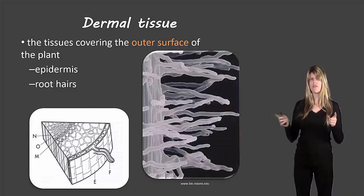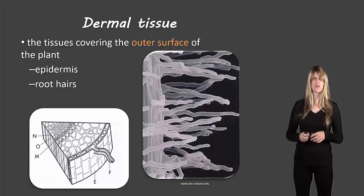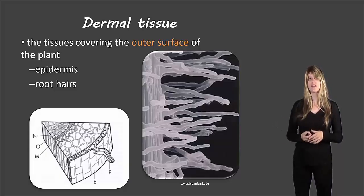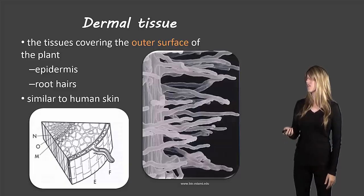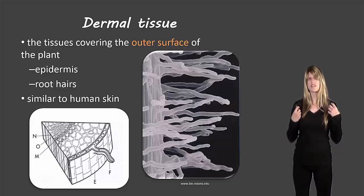We'll talk later on when we talk about root systems. We'll talk about the epidermis and the root hairs and why they're important. So the dermal tissue is kind of like the skin on a human—protects the body by covering the outside.